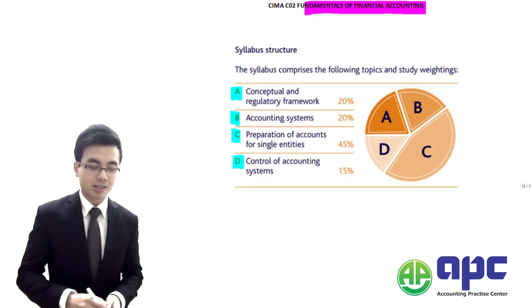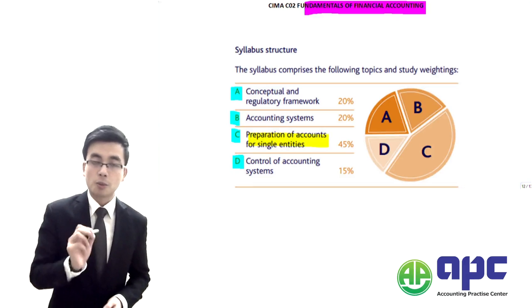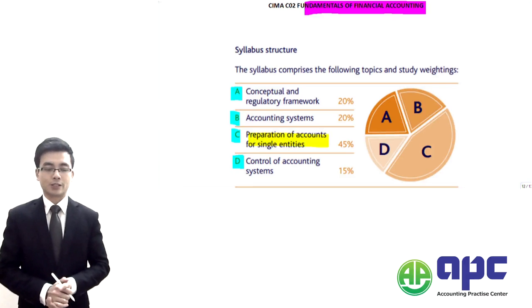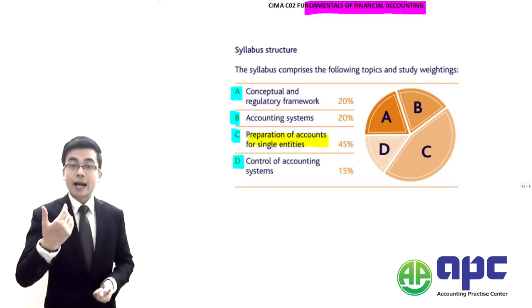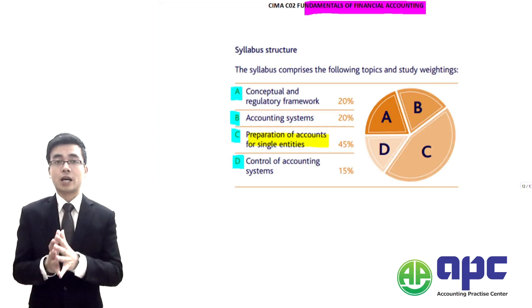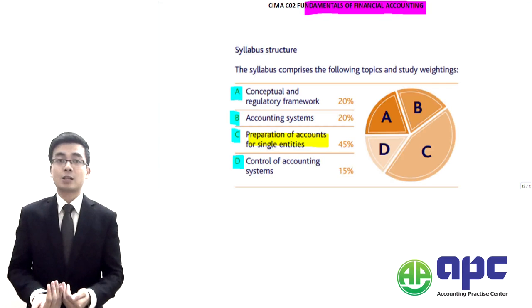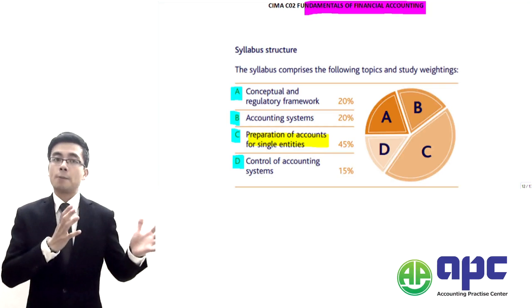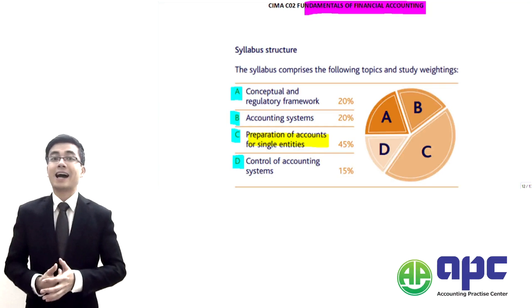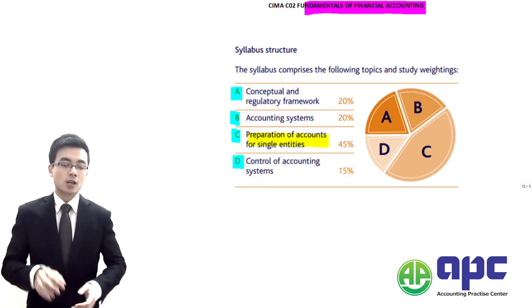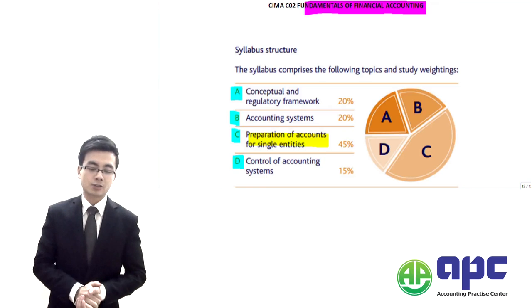As you can see in section C of our syllabus, you're going to prepare the accounts for single companies. The accounts, which means the financial statements, showing how much profits you've made, assets, as well as the liabilities and equity the company has. We are going to go through that in section C.